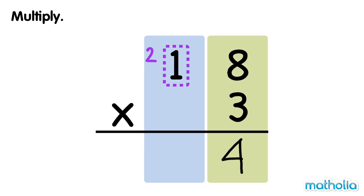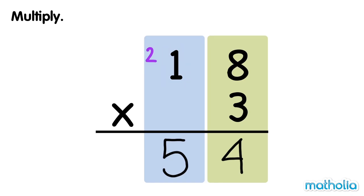Next, multiply the tens by 3 and add the regrouped tens. 1 ten times 3 equals 3 tens. Plus 2 tens equals 5 tens. 18 times 3 equals 54.